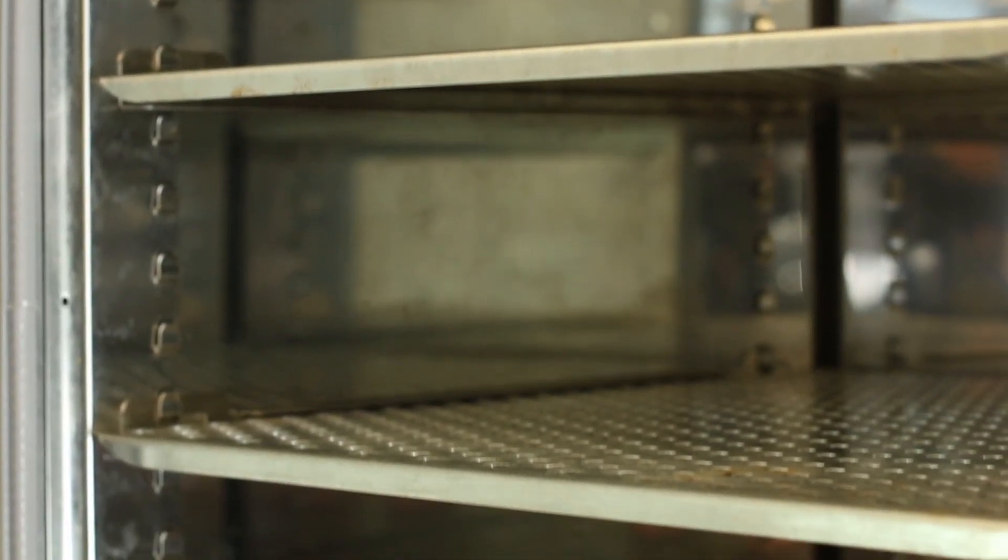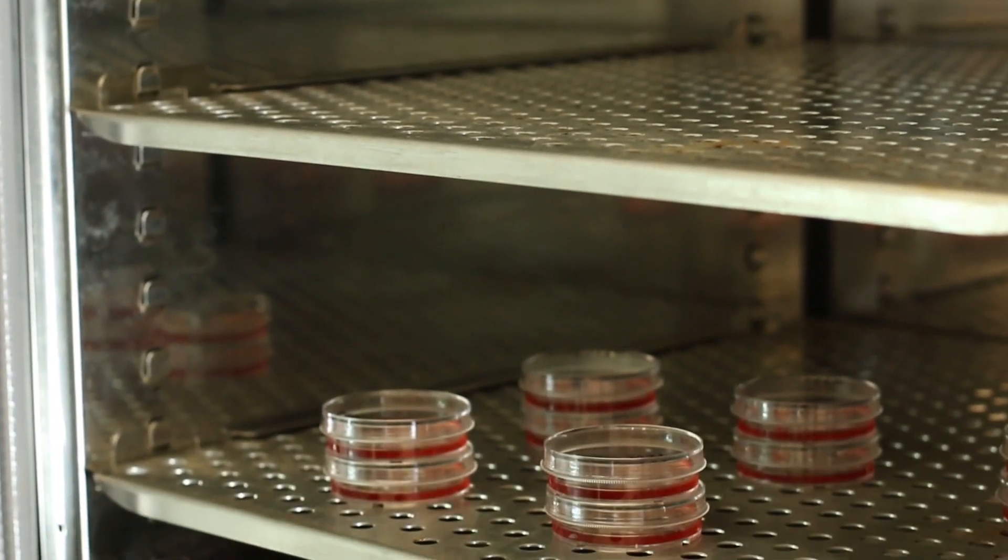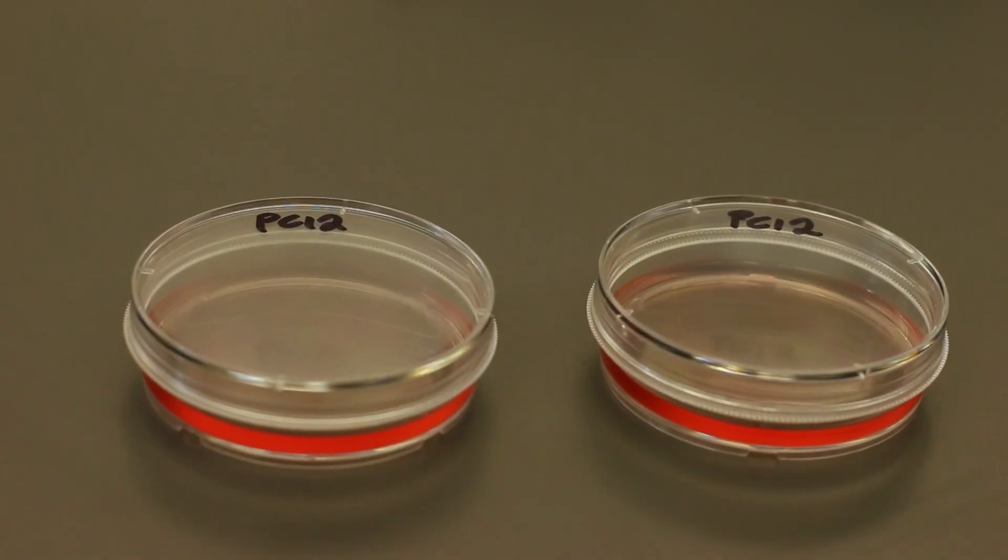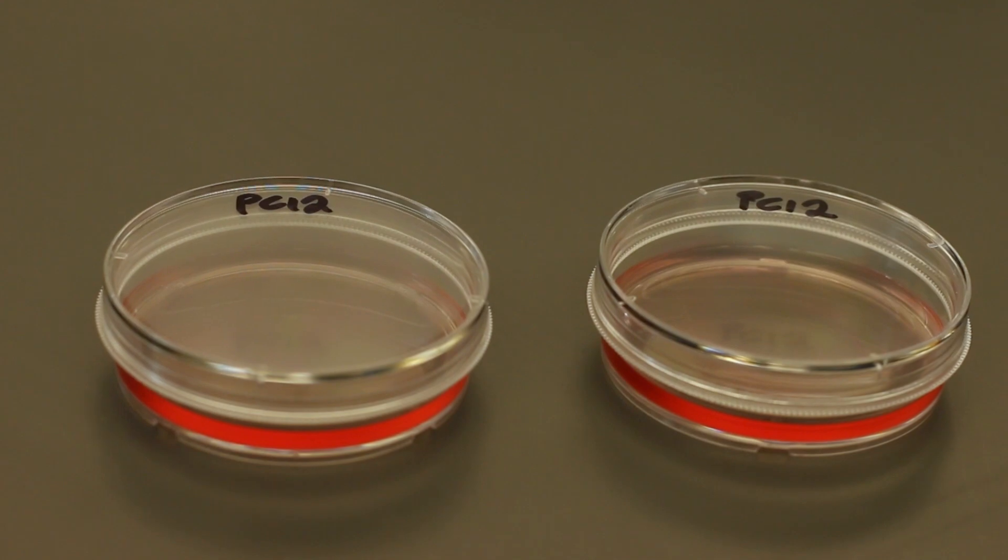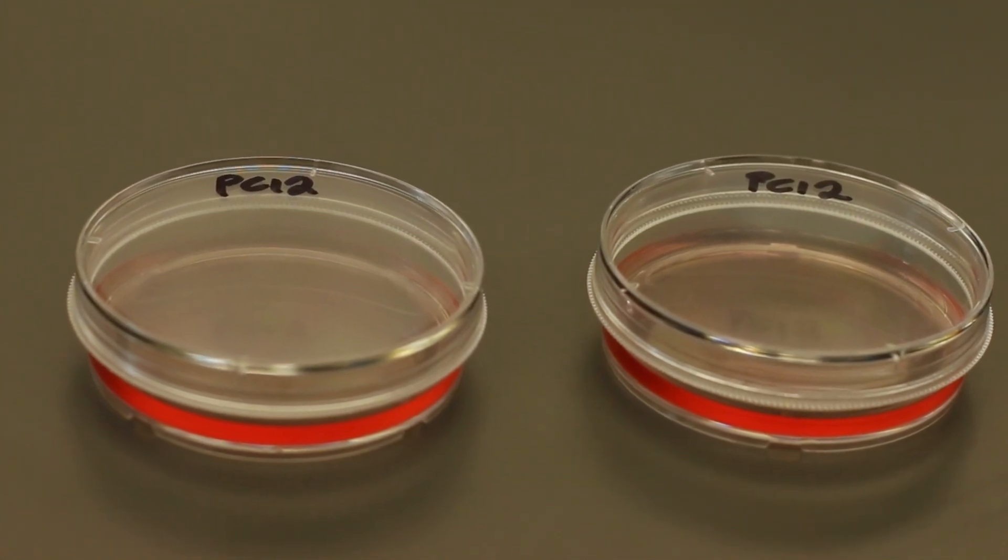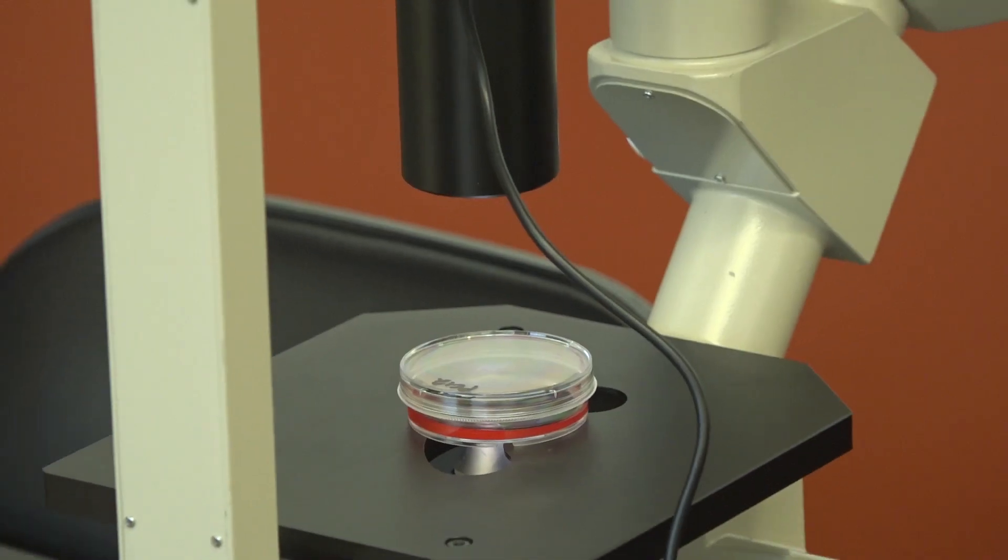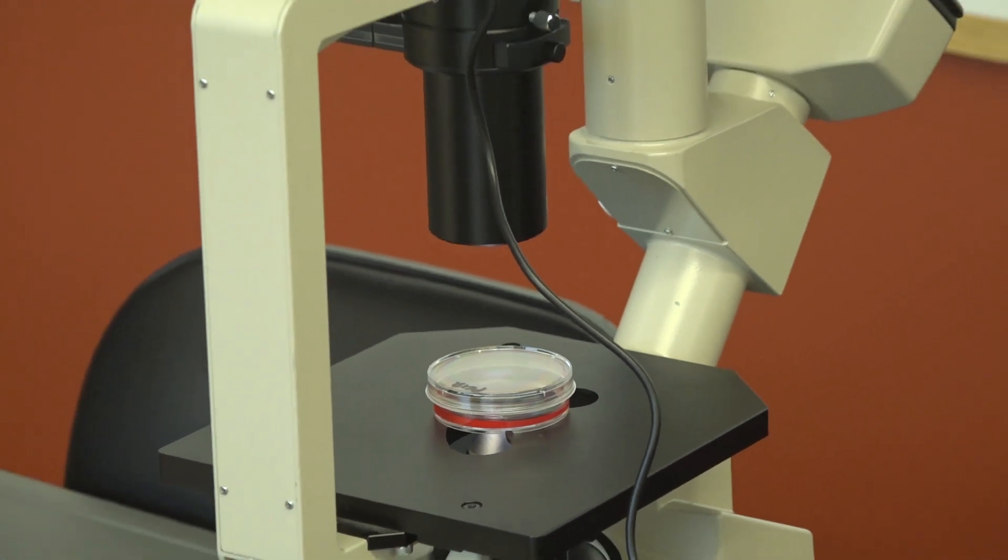So now let's open the incubator and take out our PC12 cells. The pink liquid inside the cell culture is the growth medium which provides the nutrients such as glucose and amino acids to the cells. Now let's take a look at these cells under the microscope.